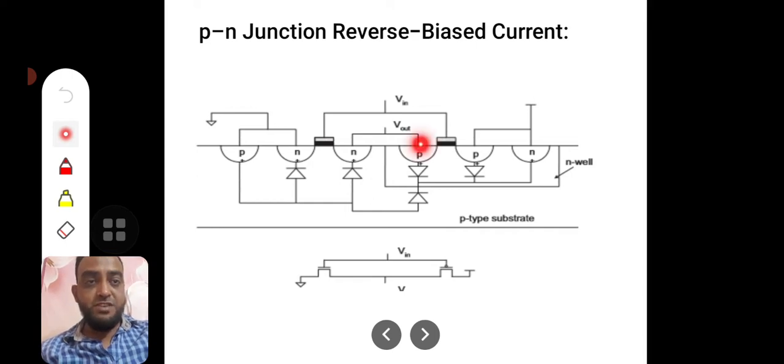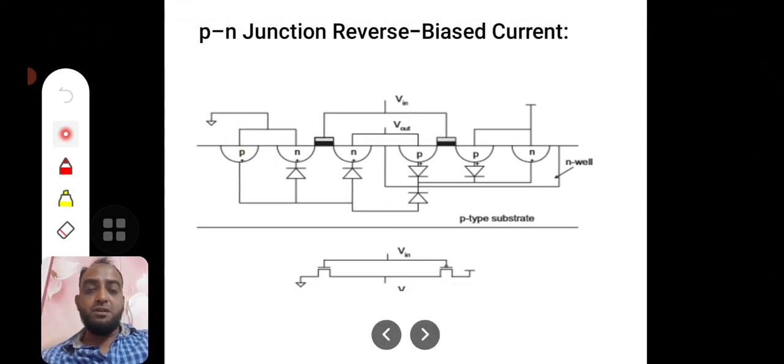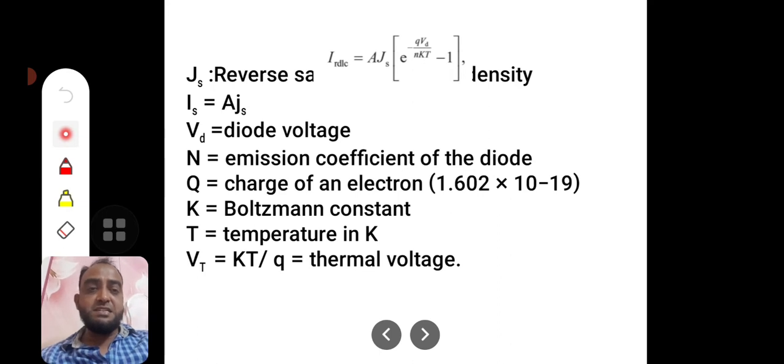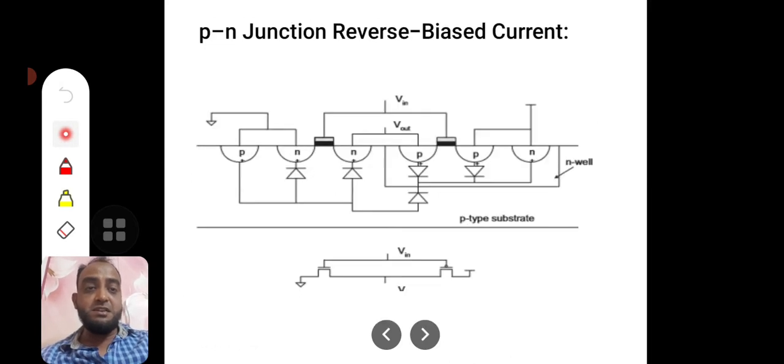This is the source of the PMOS device, and this is the drain of the NMOS device. Both are connected to get the output. This terminal is the drain of the PMOS device connected to supply, and this terminal is the source of the NMOS device connected to ground. These two additional diffusions are made to have proper resistivity in the device. So this is the basic CMOS inverter. The first current is reverse-biased PN junction leakage diode leakage current.